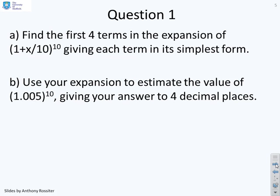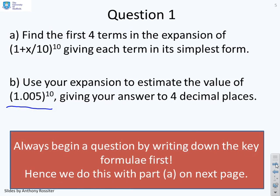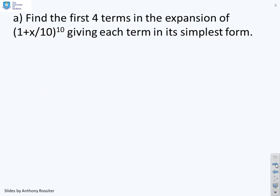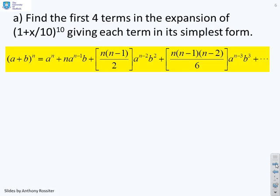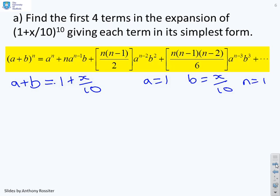First question: find the first four terms in the expansion of (1 + x/10) to the power 10, giving each term in its simplest form. Having done that, Part B: use your expansion to estimate the value of 1.05 to the power 10, giving your answer to 4 decimal places. We write down the key formula first for Part A, and match terms: A plus B equals 1 plus x over 10, so A equals 1, B equals x over 10, and N equals 10.